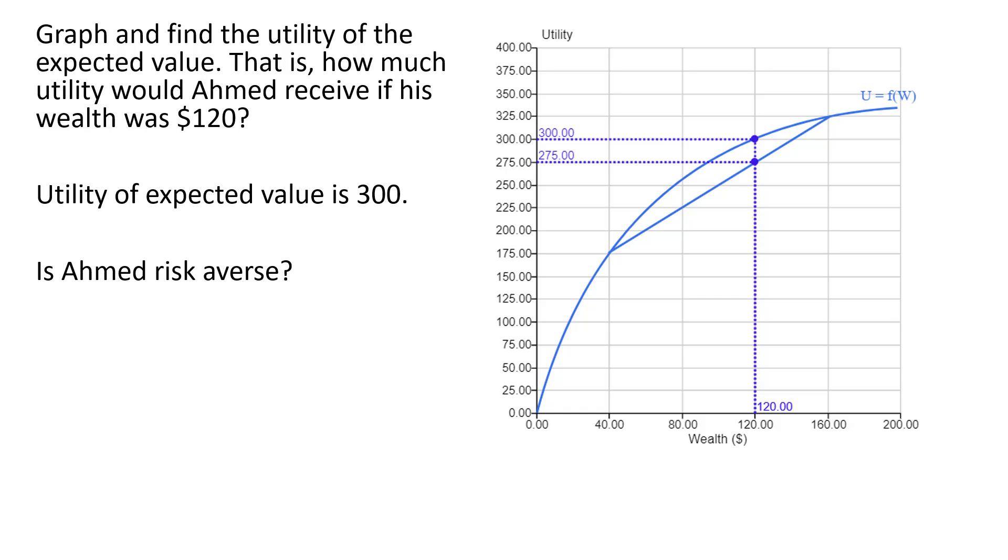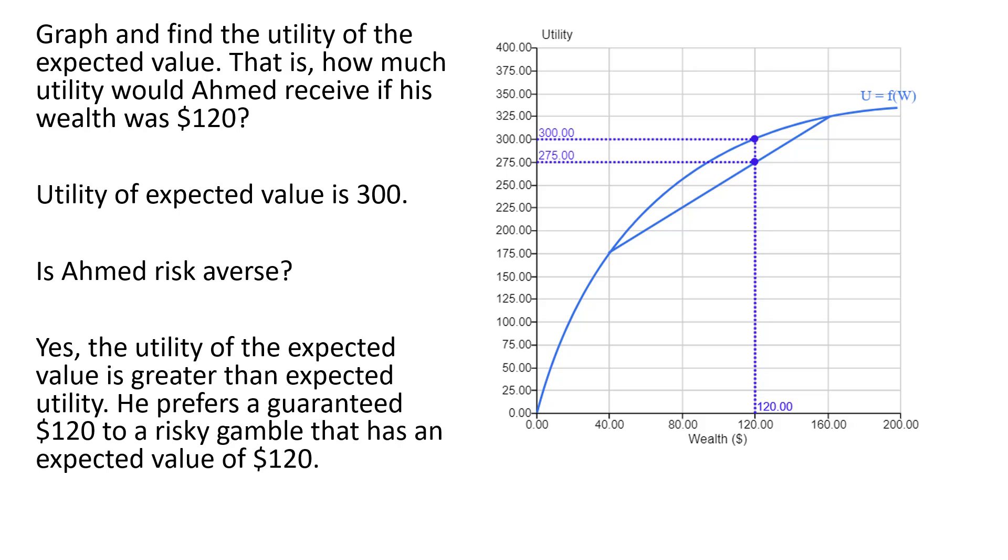Is Ahmed risk averse? Yes, the utility of the expected value is $300, which is greater than the expected utility of $275. He prefers a guaranteed $120 to a risky gamble that has an expected value of $120.